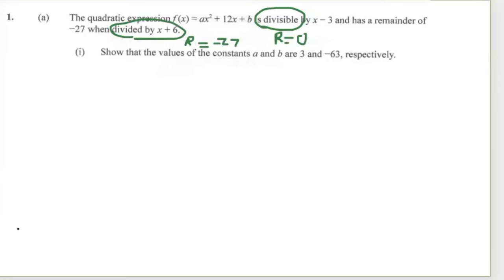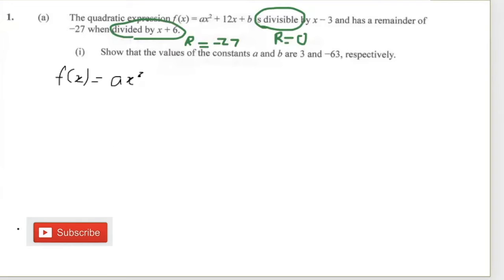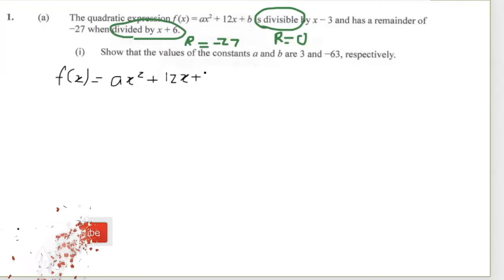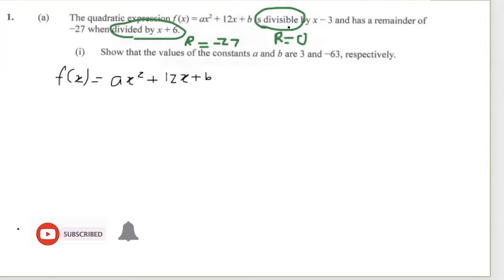We'll use this information, so let's start with the part that says divisible. The function given is f(x) = ax² + 12x + b. The part that states divisible by x minus 3 means that when I divide by x minus 3 I will get the remainder zero.